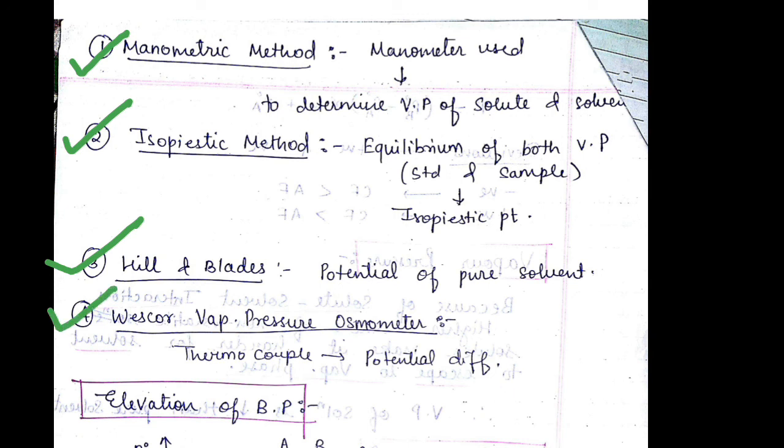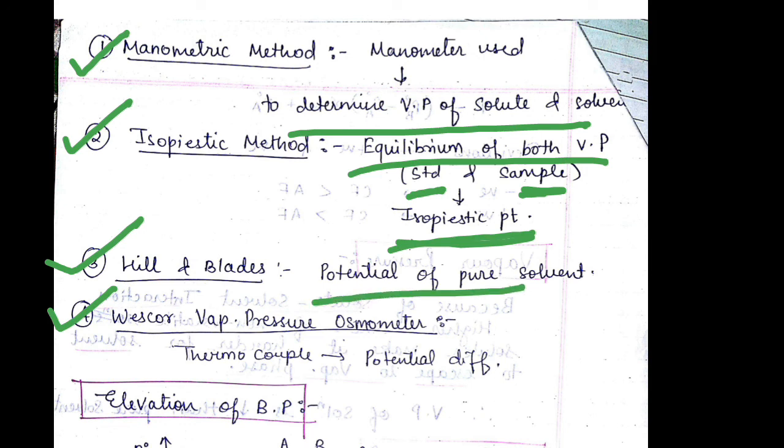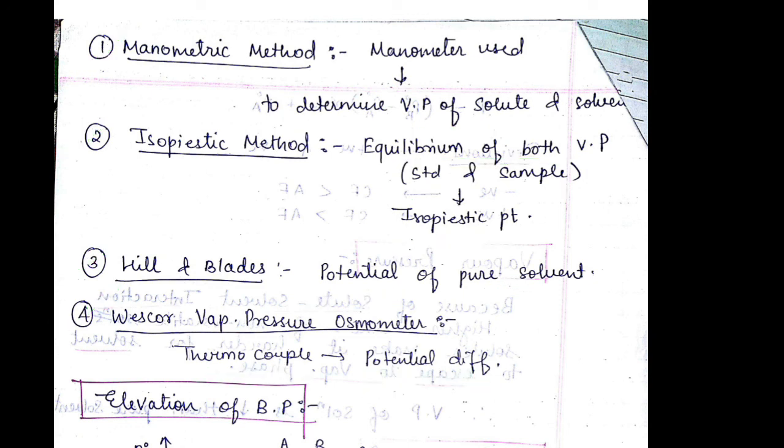Manometric method is used to determine the vapor pressure of solute and solvent. Isopiestric method is the method in which there is equilibrium of both vapor pressures, standard and sample. At the isopiestric point we determine the vapor pressure. Hills and Blades are used for determining the potential of pure solvent. Vescore vapor pressure osmometer uses thermocouple and potential difference is calculated.